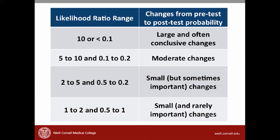How do we interpret this likelihood ratio? Here's a rough guide. Likelihood ratios of greater than 10 or less than 0.1 generate large and often conclusive changes from pretest to post-test probability. Likelihood ratios from 5 to 10 or 0.1 to 0.2 generate moderate shifts. Likelihood ratios of 2 to 5 and 0.2 to 0.5 generate small but sometimes important changes. And likelihood ratios between 1 to 2 and 0.5 to 1 generate small and rarely important changes from pretest to post-test probability.